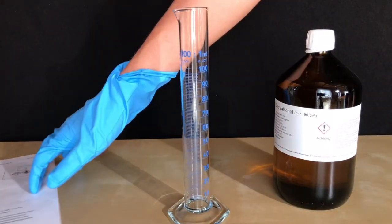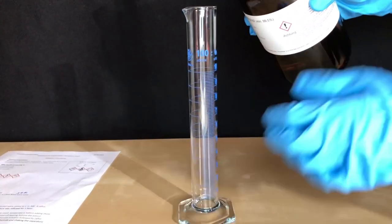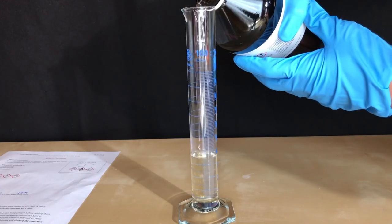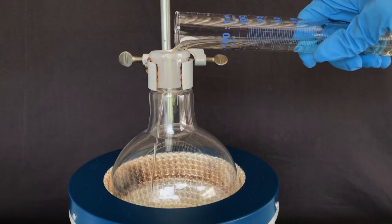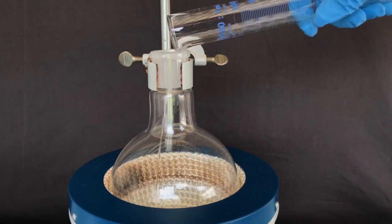Without further ado, let's begin. We started off by measuring out about 52 ml of Benzyl Alcohol. For good luck, we spilled some of it. The Benzyl Alcohol was transferred to a 1 liter round-bottom flask containing a stir bar.